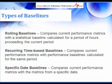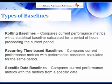There are three types of baselines: rolling baselines, recurring time-based baselines, and specific date baselines. Rolling baselines compare current performance baselines with performance baselines calculated from the current period — for example, comparing last month's performance to the average performance of the previous 12 months. Recurring time-based baselines compare current performance metrics with baselines calculated from the same period; daily or weekly baselines are good examples. Specific date baselines compare current performance metrics with metrics from a specific date — for example, gathering baseline sales metrics for the day after Thanksgiving.